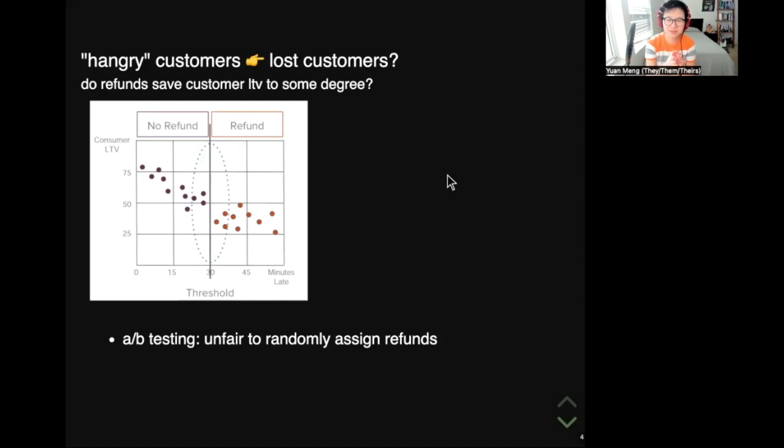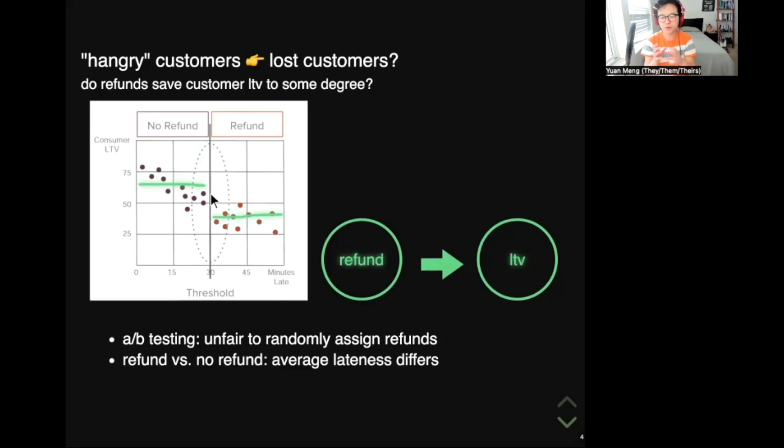So with AB testing out of the window, what else can we do? Perhaps we can look at the data and see what the average lifetime value is for customers who got a refund and compare that with the average lifetime value of customers who didn't get a refund. Maybe the difference between those two averages is the treatment effect of refunding that we're looking for. But something looks really strange in this graph. It seems on average customers who got a refund have lower lifetime values compared to those who didn't. Does that mean issuing a refund backfired? It actually hurt lifetime values somehow? That would be a ridiculous conclusion.